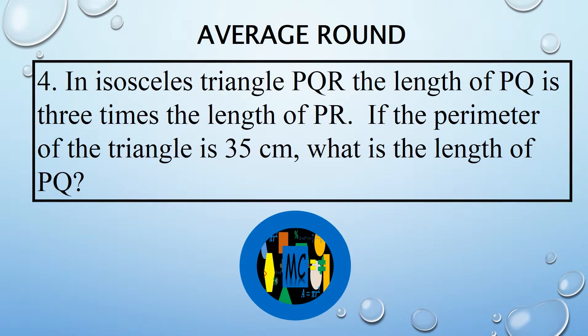In isosceles Triangle PQR, the length of PQ is 3 times the length of QR. If the perimeter of the triangle is 35 centimeters, what is the length of PQ?